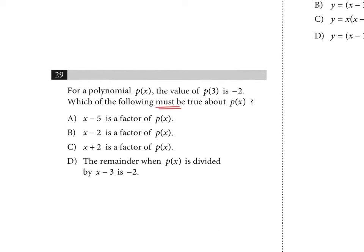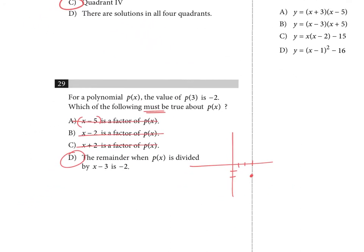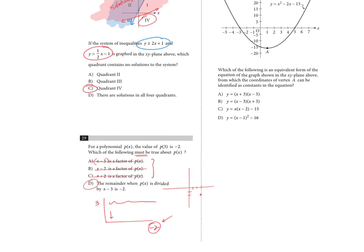Number twenty-nine: for polynomial p(x), the value p(3) equals negative two. Which of the following must be true? All that information tells us is that the point (3, negative 2) is on the graph. You can't conclude anything about factors from this alone. By the remainder theorem, when you divide p(x) by (x minus 3) using synthetic division, the remainder is negative 2. The answer is D.